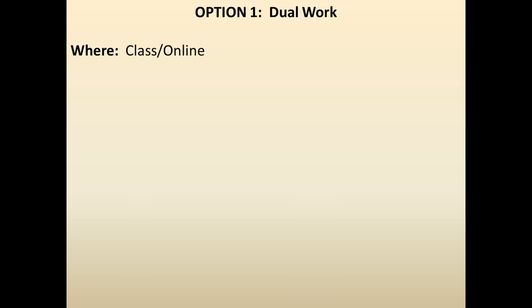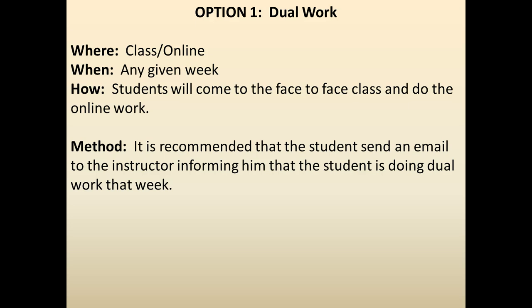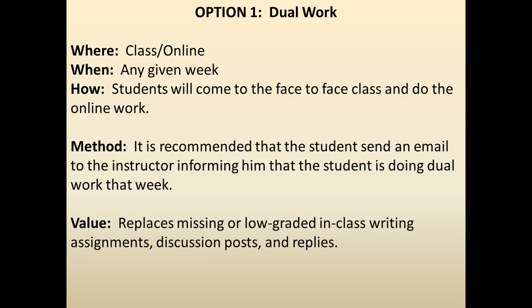Option number one: dual work. This would happen in the face-to-face class and online, and you can do it in any given week. Students would come to the face-to-face class and also do the online work — that is, watch the online videos, participate in the online discussion, and make sure you do everything in the week expected of both face-to-face and online students. It's recommended that students send an email to the instructor informing him that the student is doing dual work. This helps keep the record straight. Given that students go back and forth in different environments, it can be hard to keep track. The value is that it replaces missing or low-graded in-class writing assignments, discussion posts and replies, as well as the participation grade in the face-to-face class.